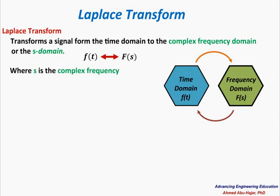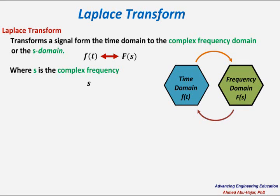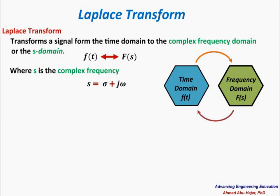Now s, as a variable and as a domain, is complex frequency — meaning it is a complex value with a real part and an imaginary part. S equals sigma plus j omega, where sigma is the real part and omega is the imaginary part. Sigma tells you how fast the exponential portion of the signal is dropping — its unit is nepers — and omega tells you what the oscillation frequency is. You can refer to the literature for more details, but s encodes both the decay rate and the oscillation frequency.